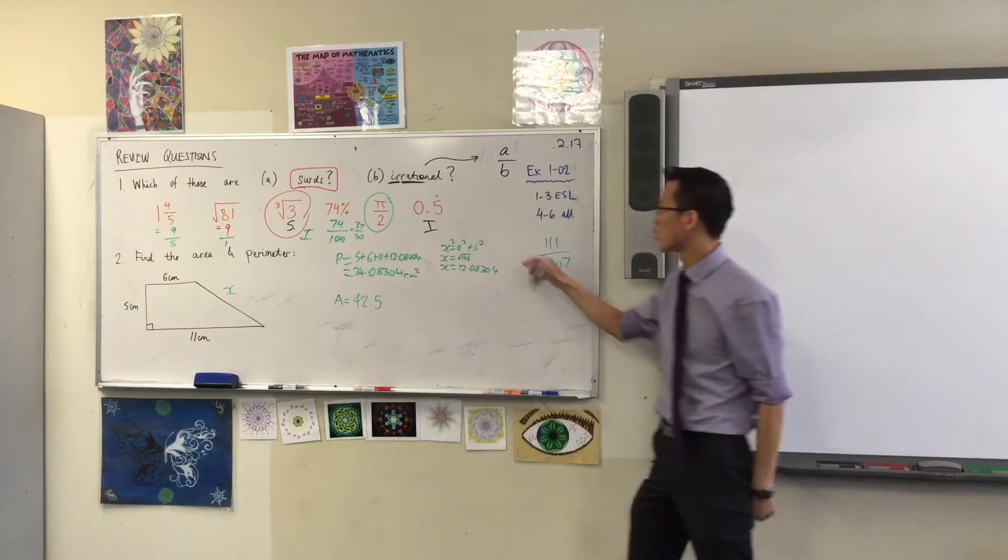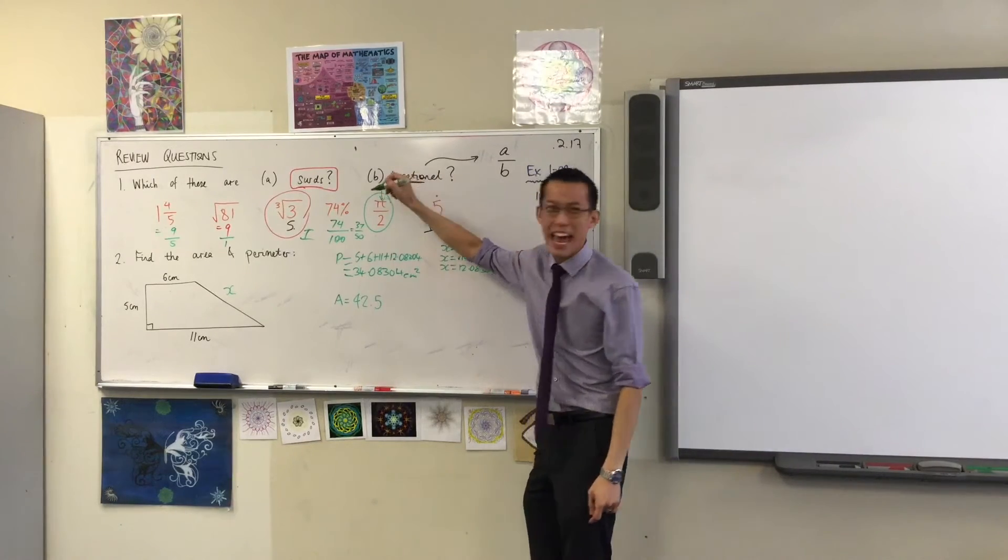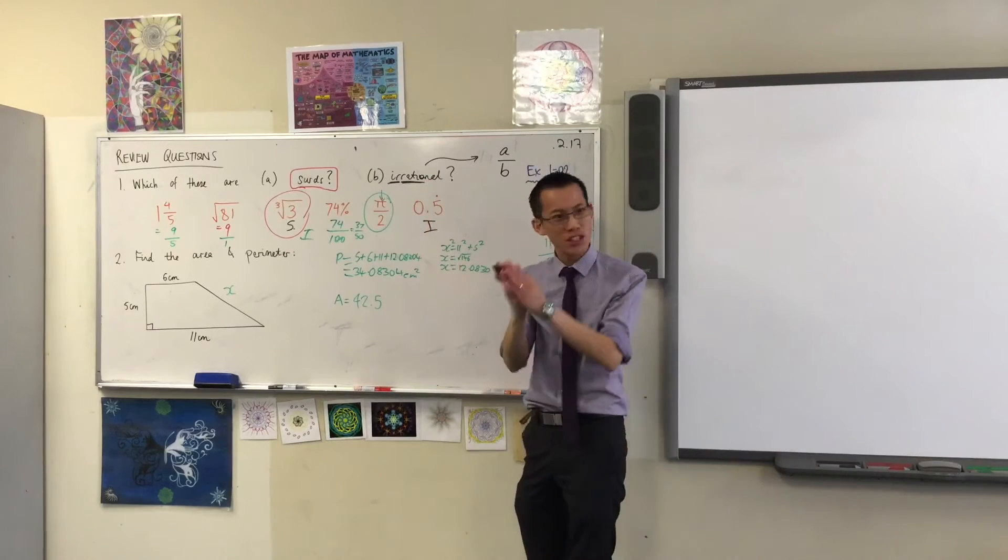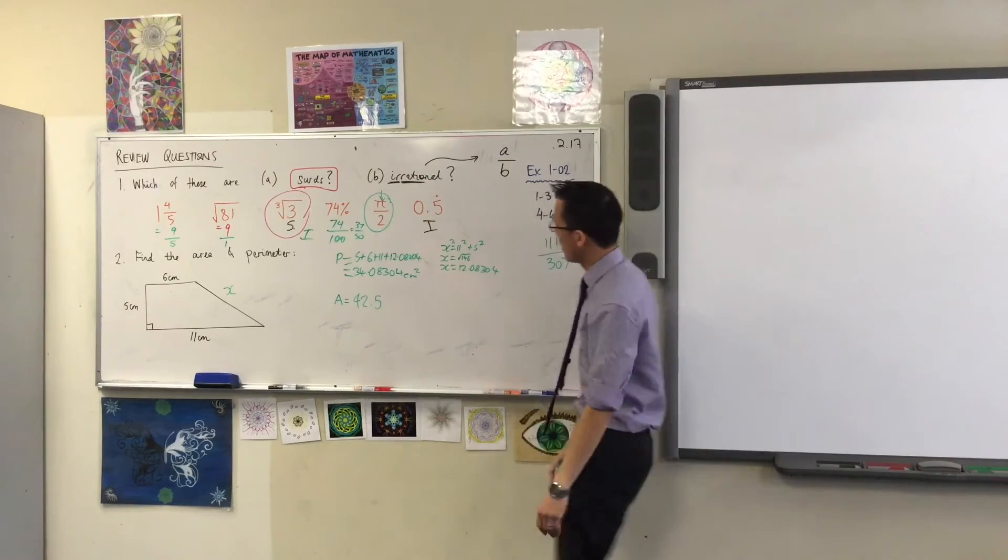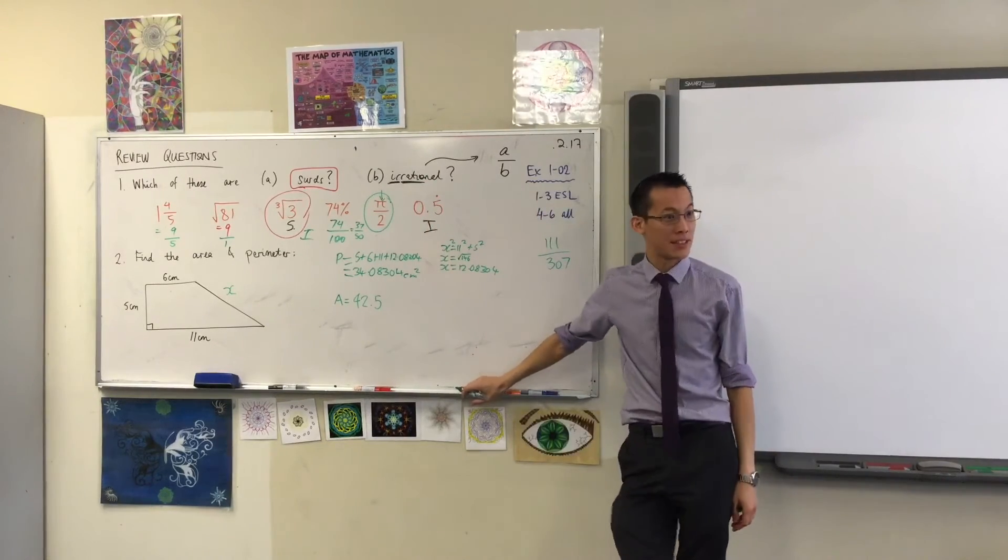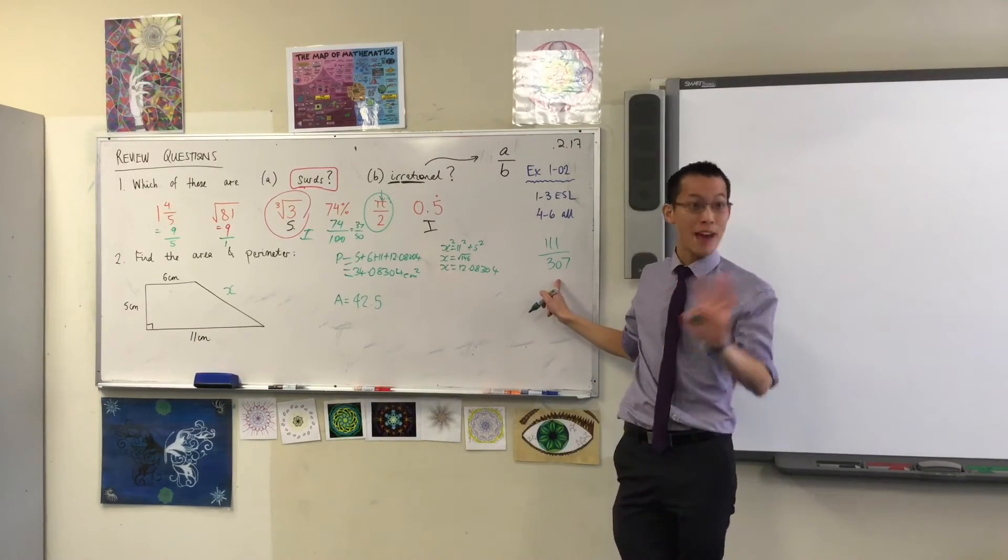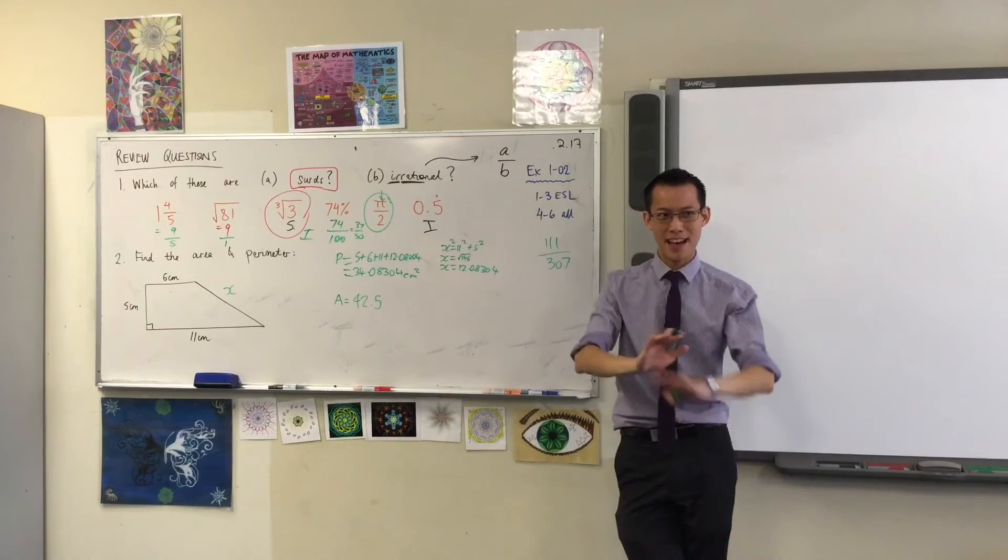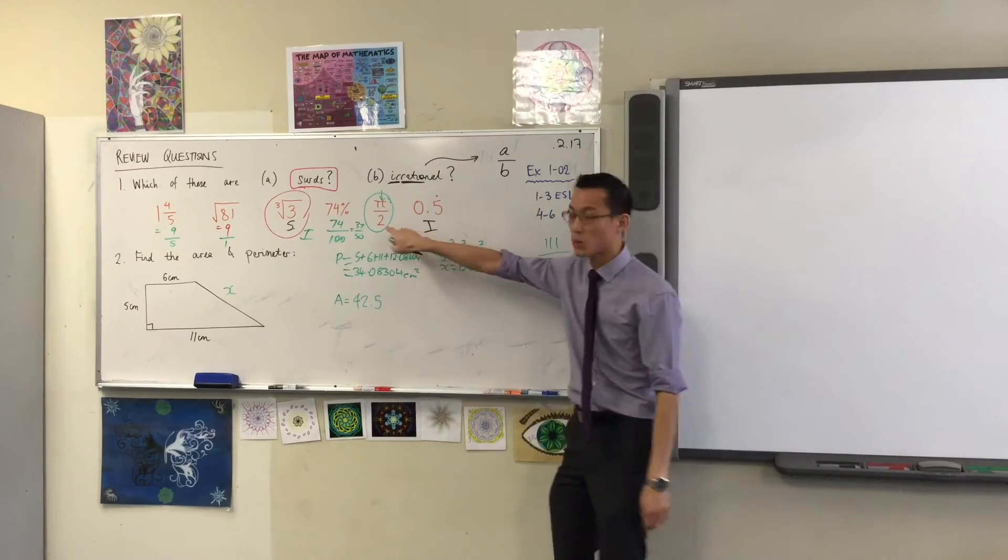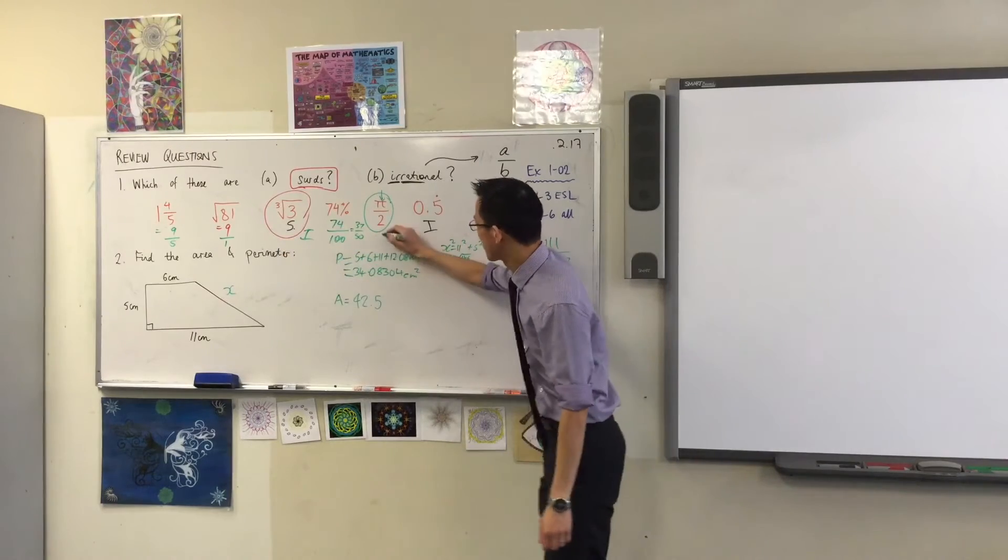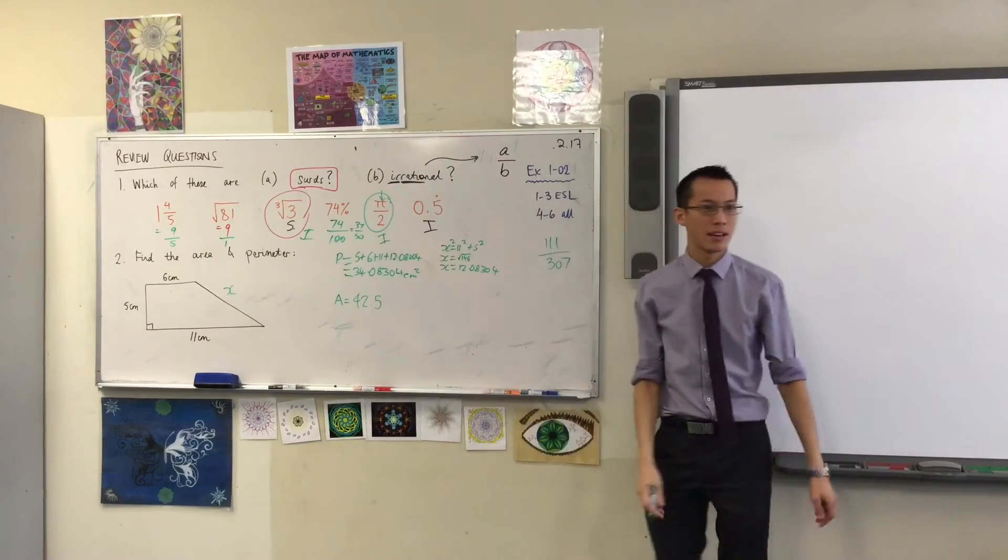So people thought for a long time, well, maybe this guy just takes ages and ages and ages to repeat. So maybe we just need to calculate a bit further. And they calculated for a very long time and they never did. Then one day they proved it, but it actually physically can't happen ever. Okay? Which is a bit fancy, outside the scope of what we're doing today. But that's why this, it's not a surd. It's irrational. Okay? Can't write it as a fraction.